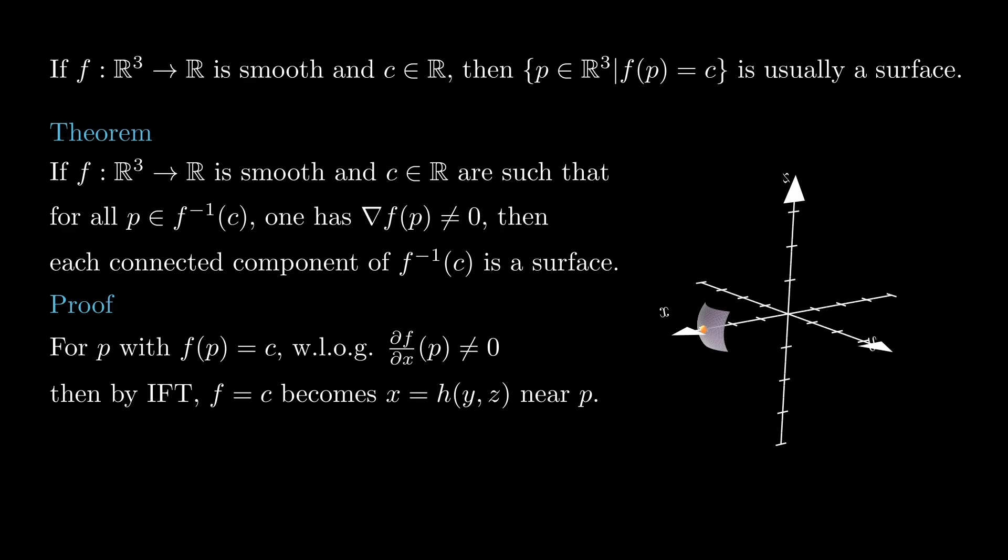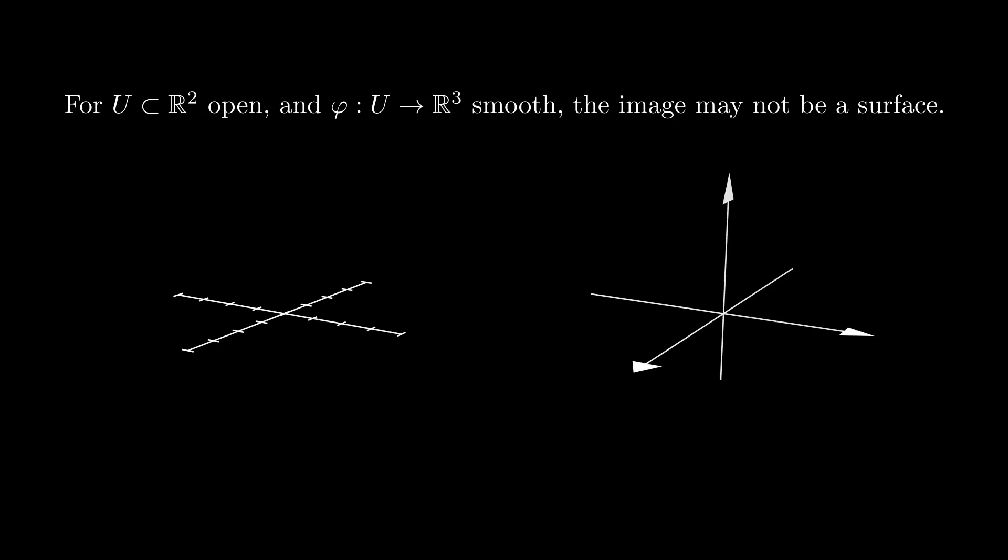Another convenient way to characterize surfaces is via parametrizations. If we consider an arbitrary smooth function from an open set of the plane to the space, the image may look nothing like the graph of a smooth function. To guarantee that a smooth function from the plane to the space produces a smooth regular surface, we require the map to be regular.